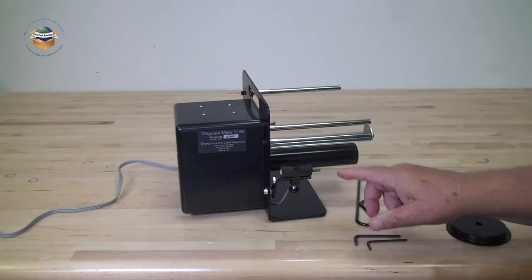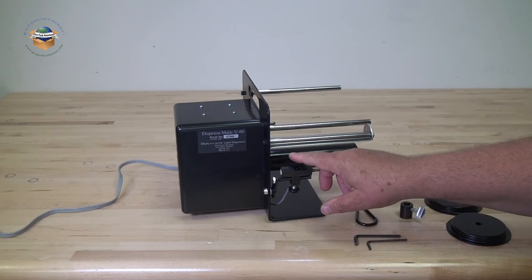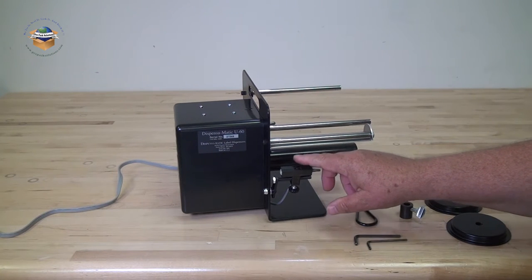When you turn the machine on, the photo eye will detect the label and stop running. When the photo eye does not see anything, the motor runs.